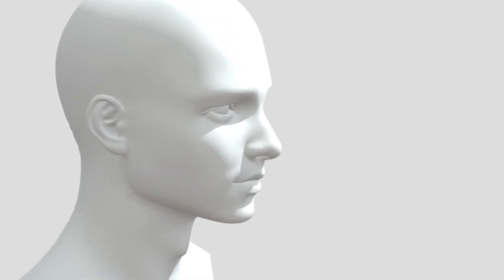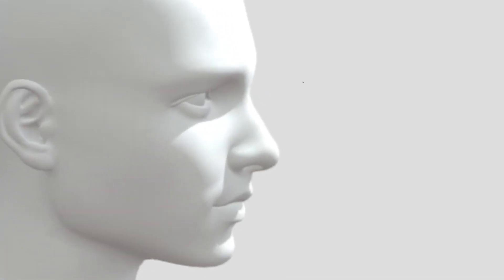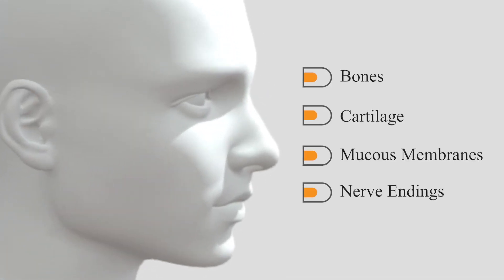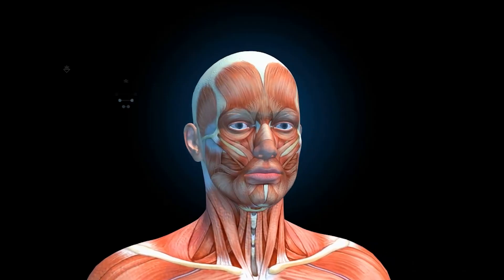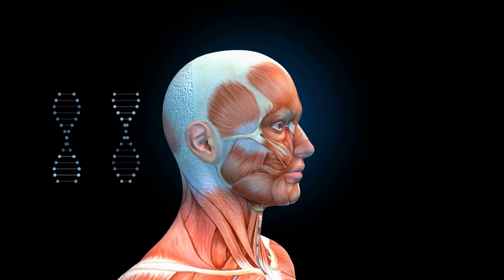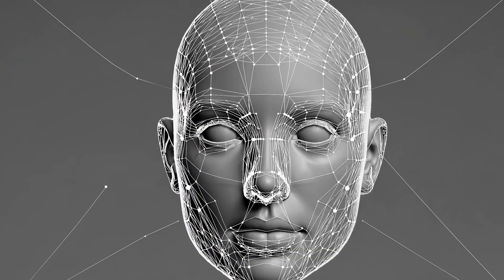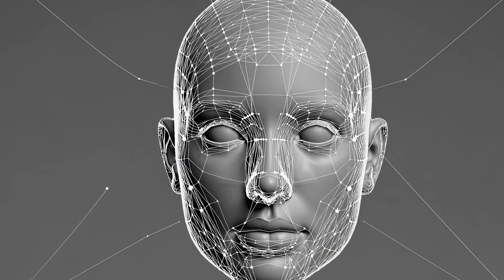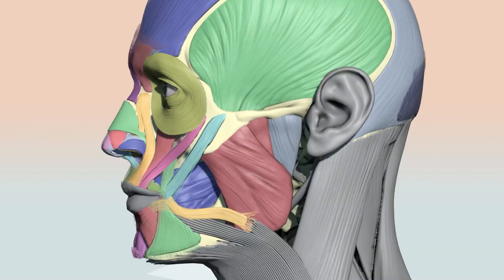Despite its small size compared to other organs, the nose is incredibly complex, containing a combination of bone, cartilage, mucous membranes, and nerve endings that all work together seamlessly. To understand how this organ functions, it is important to explore its structure, the parts that make it up, and how each of those parts contributes to its purpose.